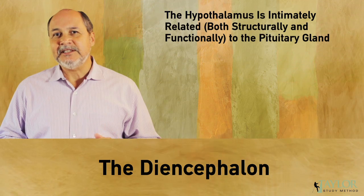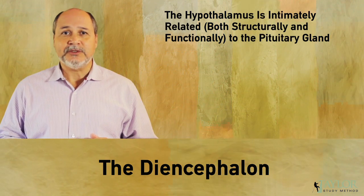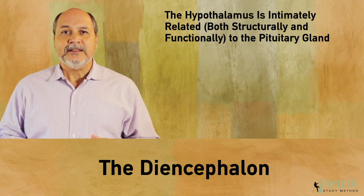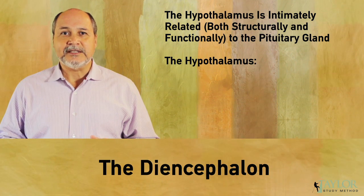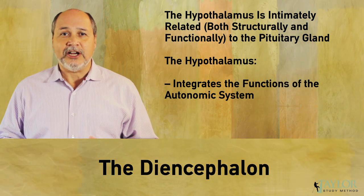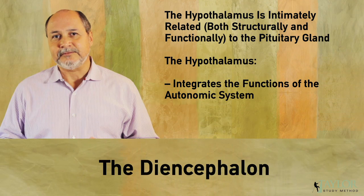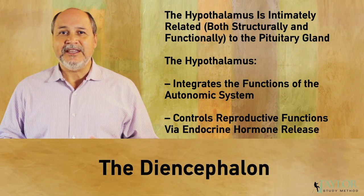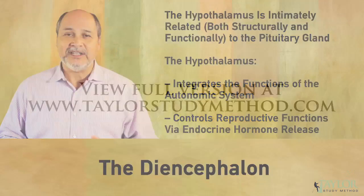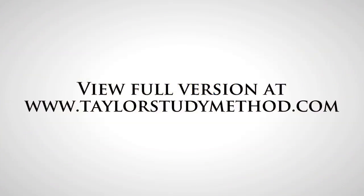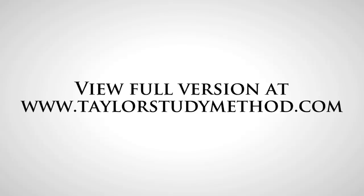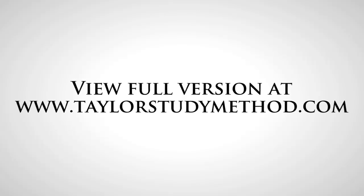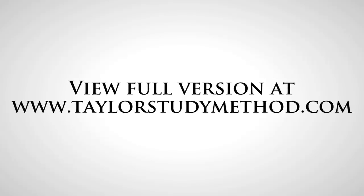The hypothalamus is intimately related both structurally and functionally to the pituitary gland. The hypothalamus integrates the functions of the autonomic nervous system and controls reproductive functions via endocrine hormone release.